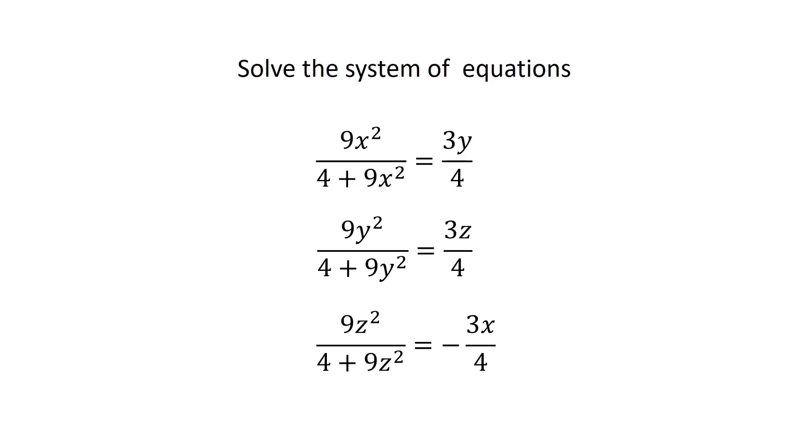9x² over 4 plus 9x² is equal to 3y over 4. 9y² over 4 plus 9y² is equal to 3z over 4. And 9z² over 4 plus 9z² is equal to minus 3x over 4.